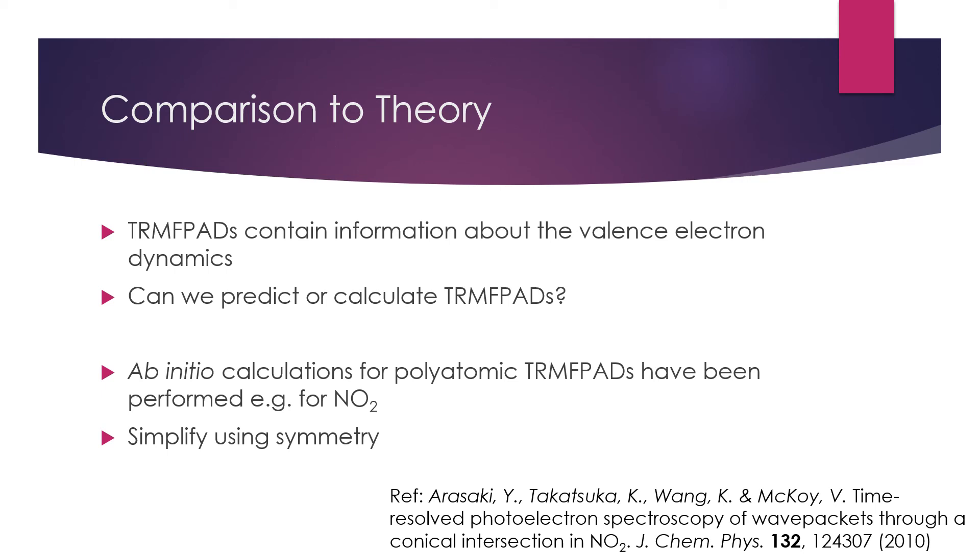The most obvious way of modeling the angular distributions is from the ground up. Ab initio methods to model the angular distributions of polyatomic molecules have been performed in the past, notably by Arasaki et al., but they are very difficult. So instead, Hockett et al. used symmetry arguments to simplify this calculation, giving a cruder model than ab initio methods would, but at a lot less effort.